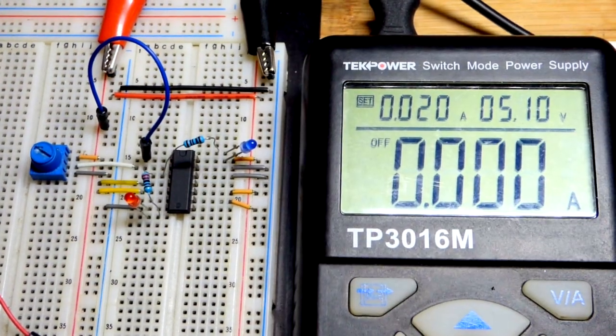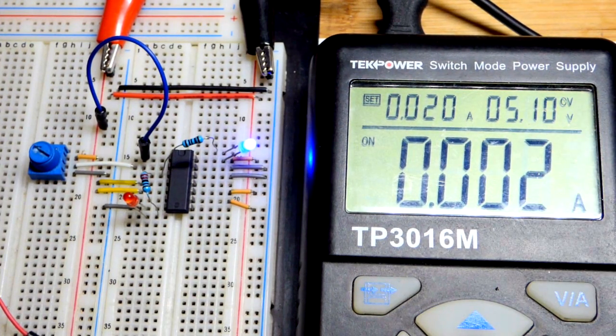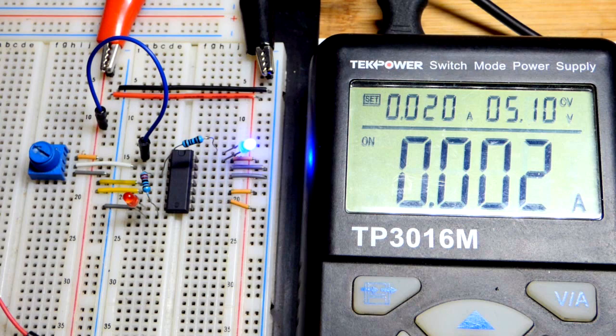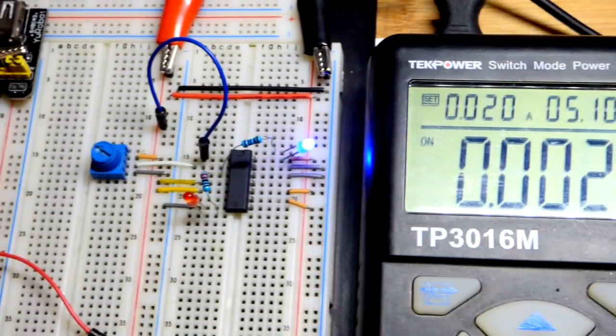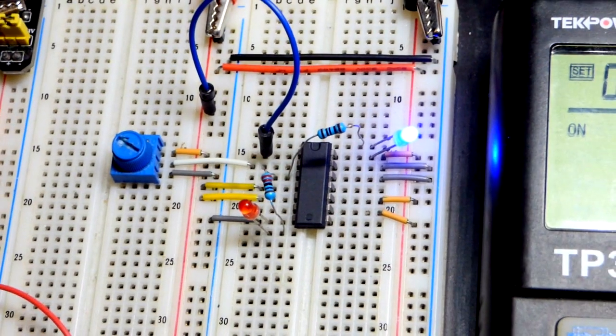So now, I'm going to apply the power. You can see 5.1 volts, close enough to 5 volts right there. And right now, the output is low. That tells us that one or the other or both of the inputs are high. As you can see, both of them are high right now.